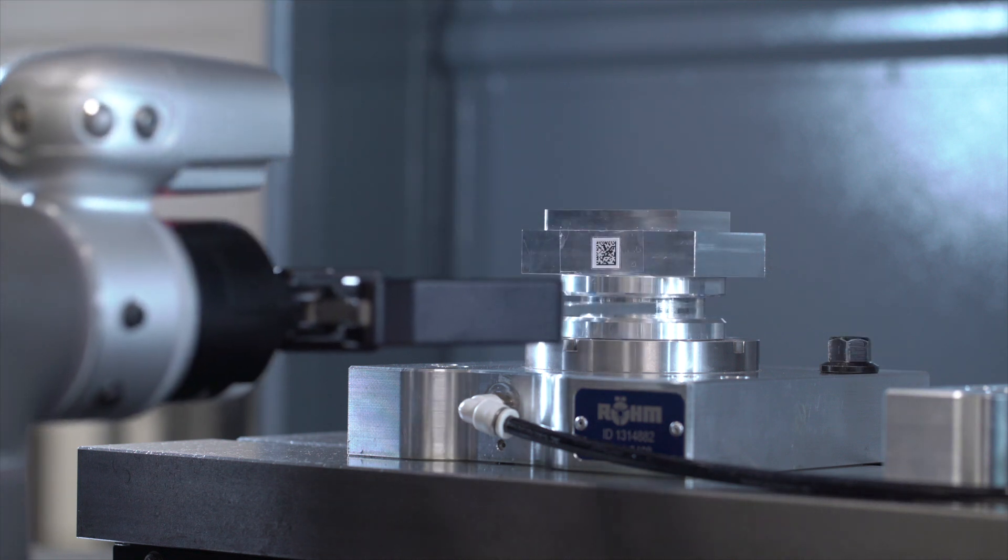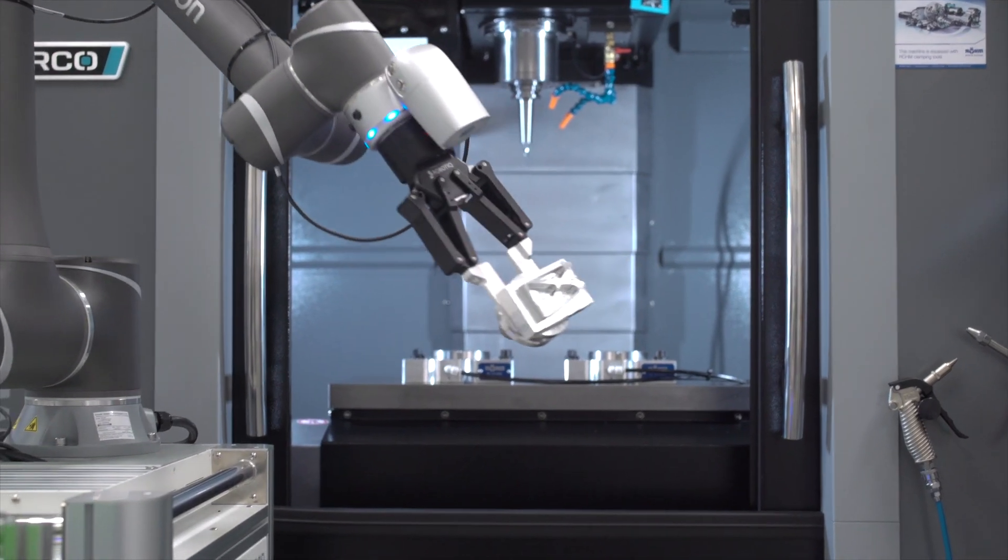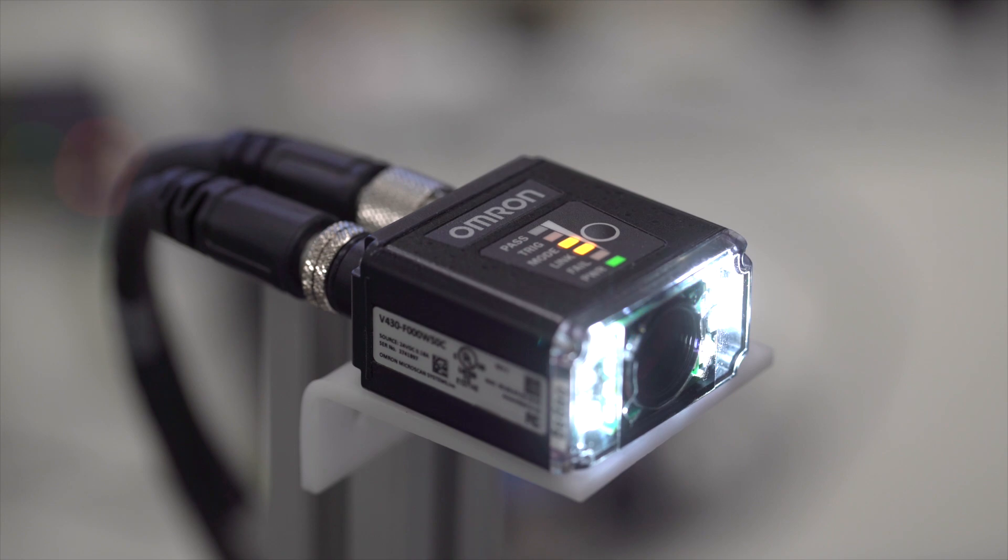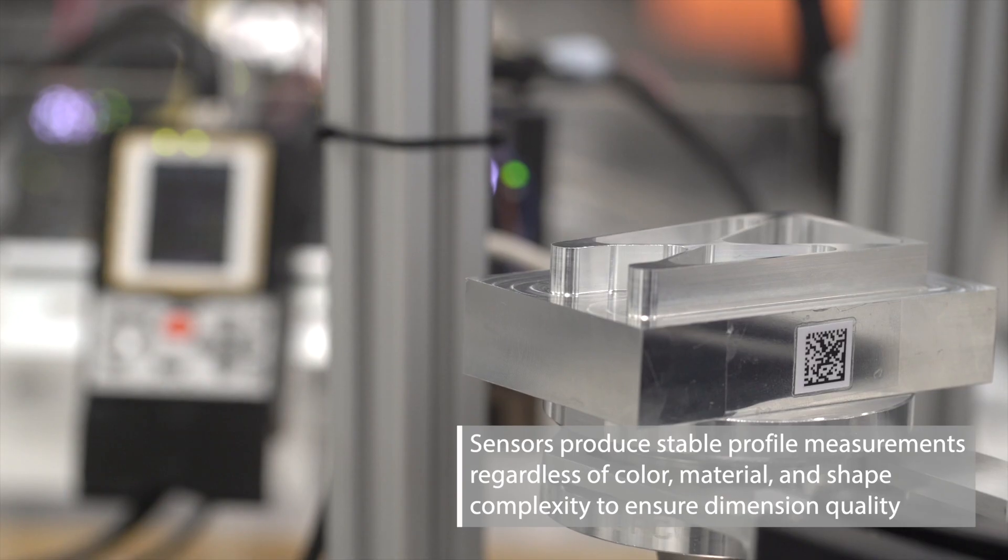After the CNC process is completed, the COBOT brings the object in front of a V430 series code scanner to identify the object, followed by a ZG2 series sensor to measure the object's dimensions.